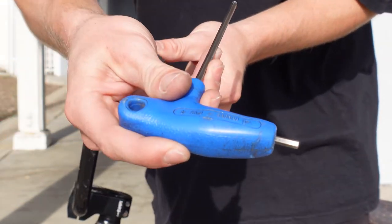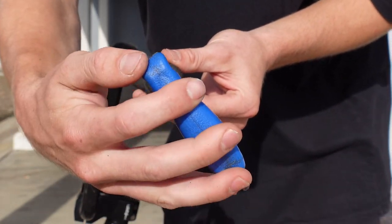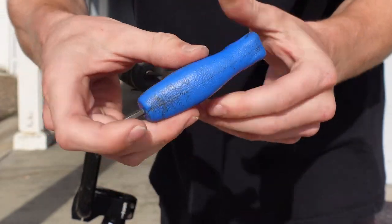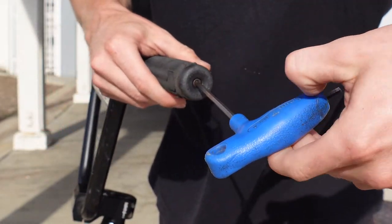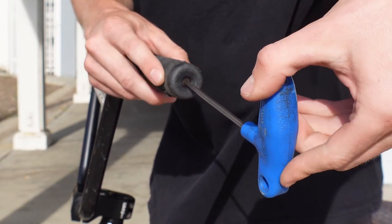Grab your allen key. Place it in the hole. Begin to tighten. So what's happening here is the inside is expanding when you screw in. So it holds it in place.